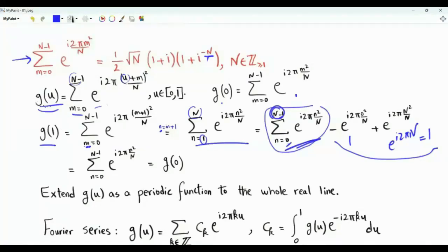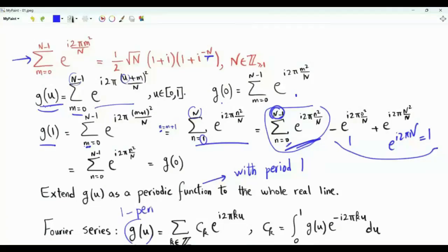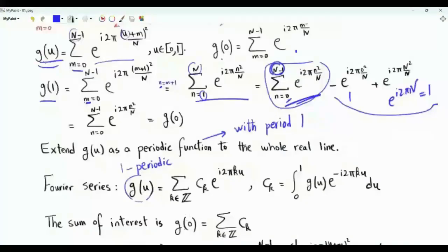If we define g on the closed interval from 0 to 1 with g of 0 equal to g of 1, we can periodize g by extending it as a periodic function with period 1 to the whole real line. Since g is one-periodic, we can express it using the complex Fourier series: g of u equals the summation over integer k of c_k times e to the i 2 pi k times u, where the period is 1.